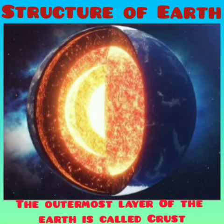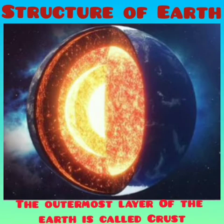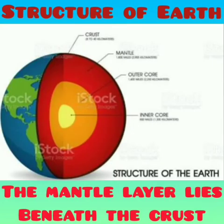The crust is the outermost layer of the Earth on which we live. There are high mountains, deep valleys, plains and deep oceans on Earth's crust. The mantle layer lies beneath the crust. It consists of molten rocks called magma. It is about 2900 km thick.